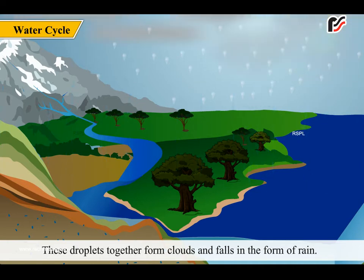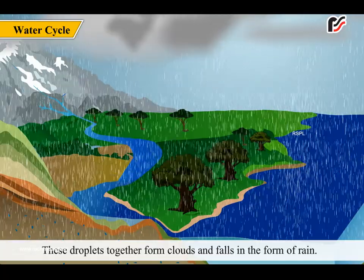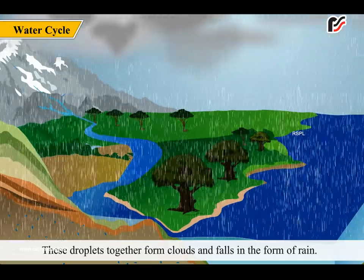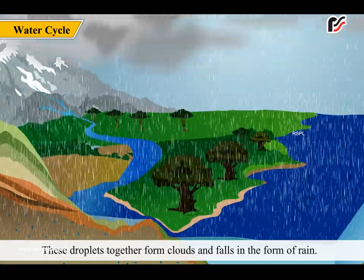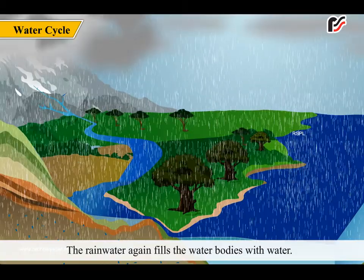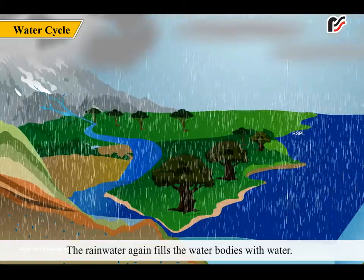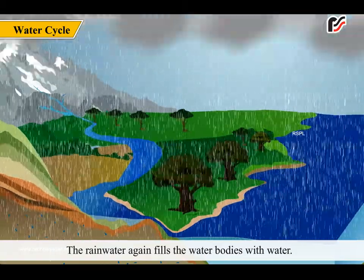These droplets together form clouds and fall in the form of rain. The rain water again fills the water bodies with water.